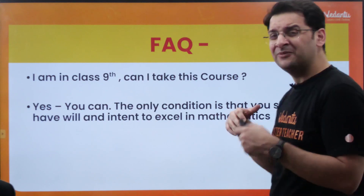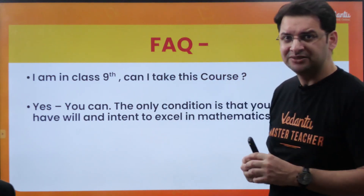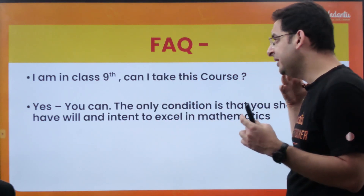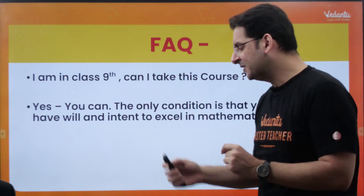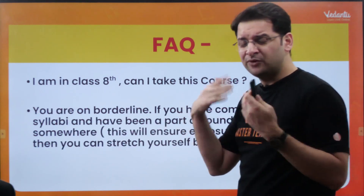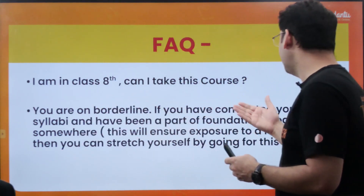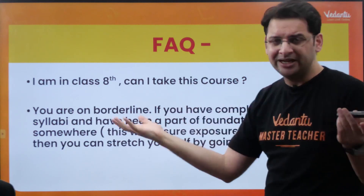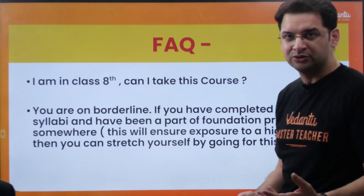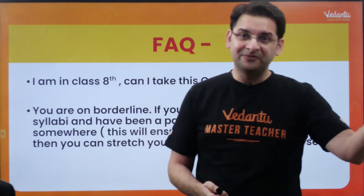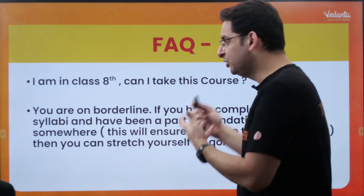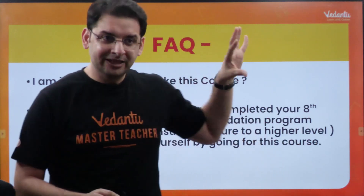Now for frequently asked questions: I'm in class 9th, can I take this course? Yes, the only condition is you should have the will to excel in mathematics. I'm in class 8th, can I go for this course? Class 8 students are on the borderline. If you have already completed class 8 and been part of a foundation program where class 9th and 10th topics were discussed, then yes you can. If you took the Olympiad Mastery Level 5 course this year, you are eligible. If there was no prior exposure, I would suggest going for Level 5 only.